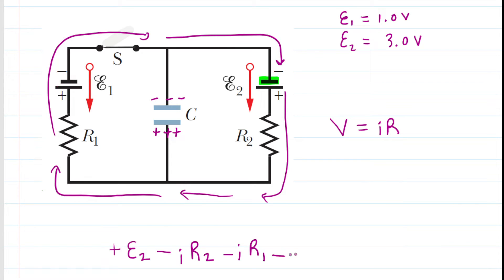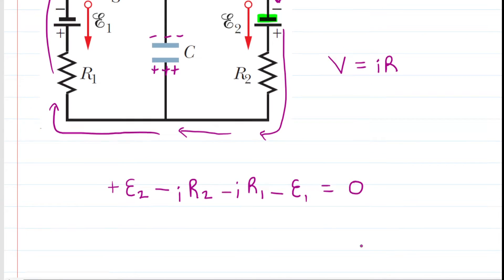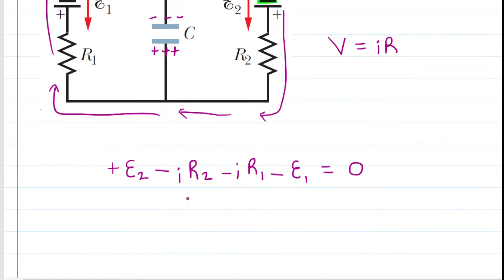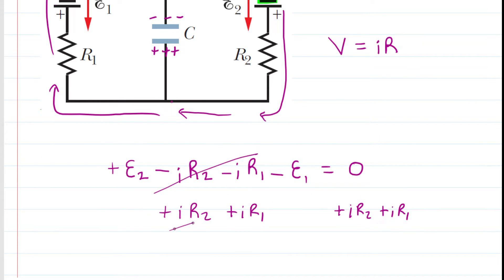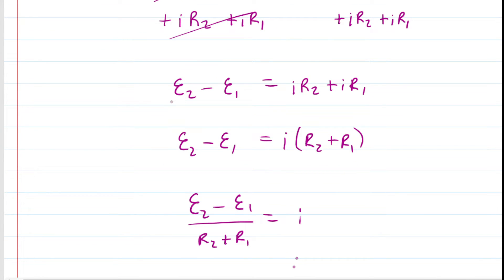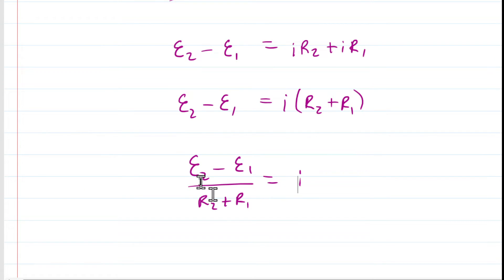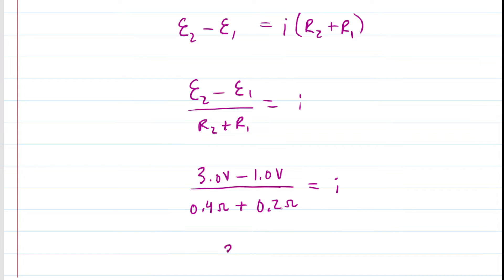Solving for the current: we add the resistor drop terms to both sides, factor out the current on the right-hand side, and divide by the total resistance. Since we know R1, R2, E1, and E2, we can solve directly. The current is approximately 3.33 amps.